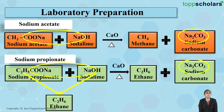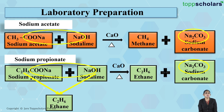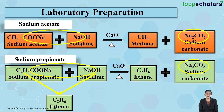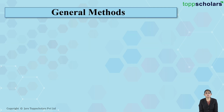So, friends, you can prepare methane using sodium acetate and you can prepare ethane using sodium propionate. In both cases, you heat the sodium salt with soda lime, which is a mixture of sodium hydroxide and calcium oxide. Now let's see the next method.